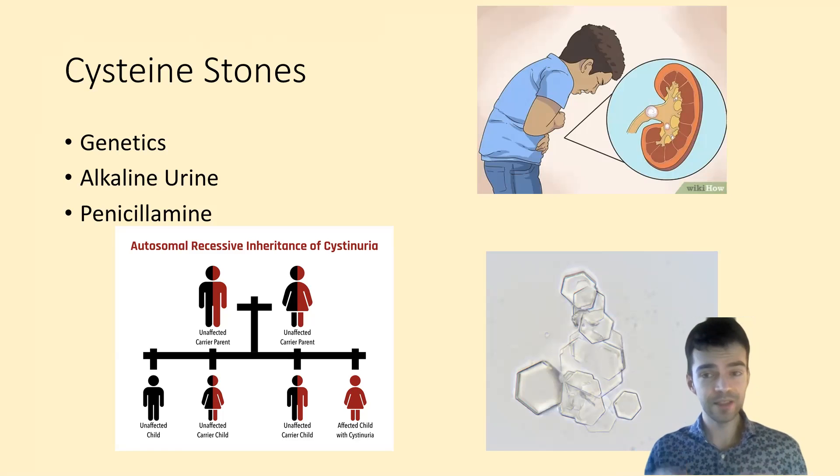These types of stones like to precipitate in alkaline environments or basic urine. Penicillamine can be used in these types of stones to chelate out the cysteine, or bind it, and prevent them from forming stones. If you have a stone in a child, you should suspect a cysteine stone on the differential.